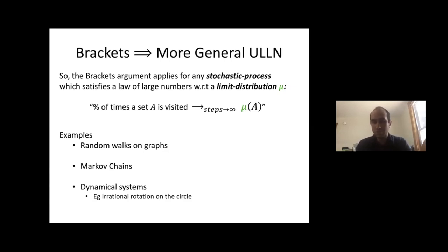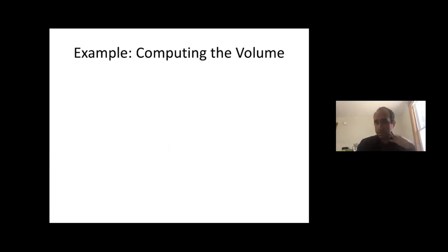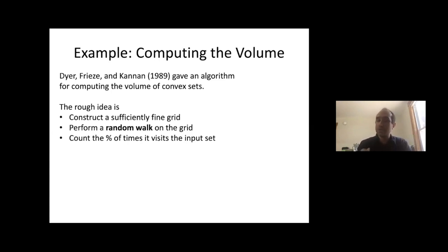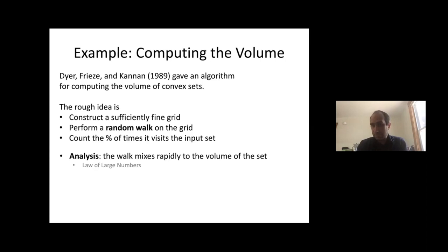The bracket argument applies to any stochastic process satisfying a law of large numbers with respect to a limit distribution μ—such as random walks on graphs, Markov chains, or irrational rotations of the circle. These processes cannot use the VC symmetrization argument since permuting a random walk does not yield another valid walk. One example application is the Dyer-Frieze-Kannan algorithm for computing volumes of convex sets, which uses a random walk on a fine grid and counts how often it visits the input set.